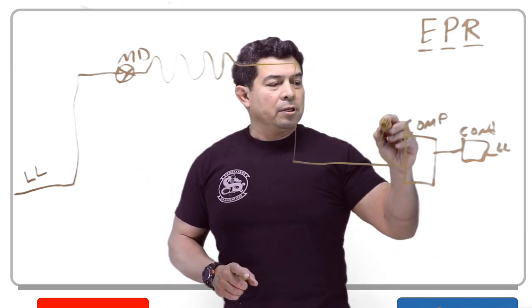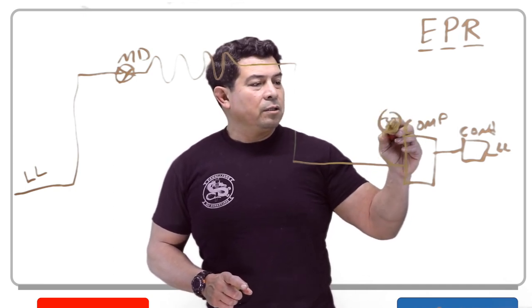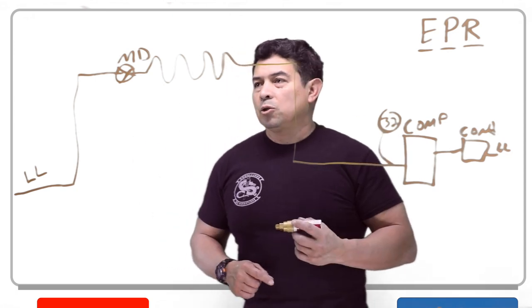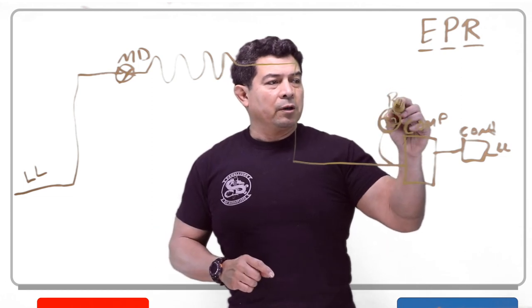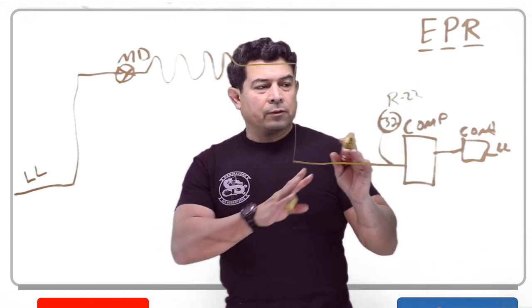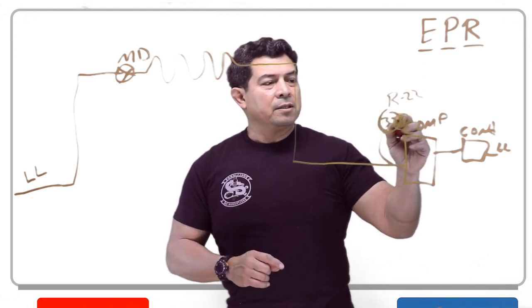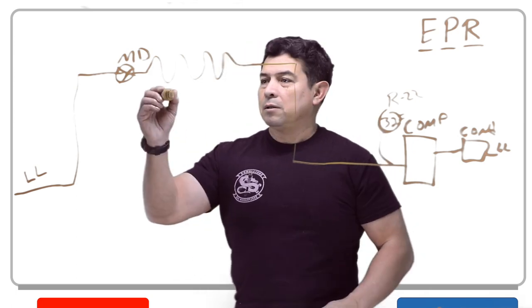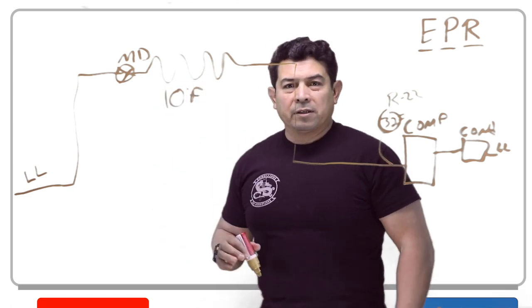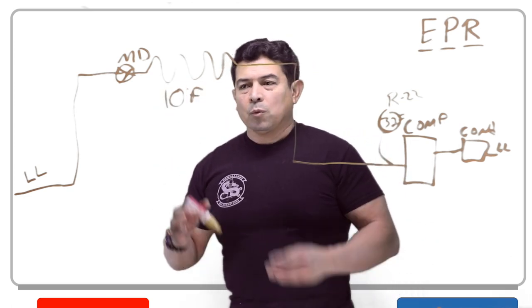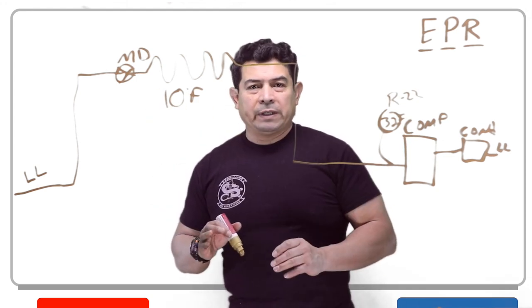Now let's say that this compressor has a suction pressure of 32 PSIG. If this is R22 - I'm talking about R22 here - if it has 32 PSI suction, that means the evaporator is going to be 10 degrees Fahrenheit. Because this is a refrigeration system, we're keeping things very cold in there. So we're maintaining this evaporator at 10 degrees.